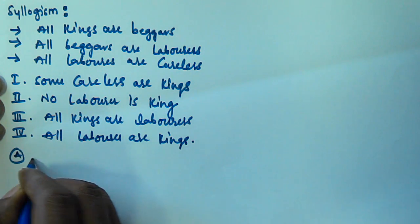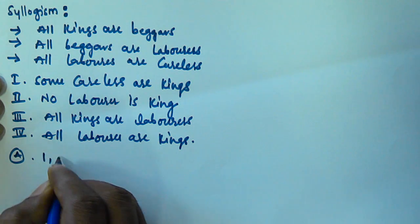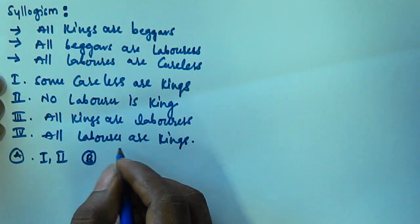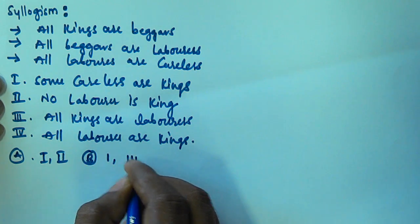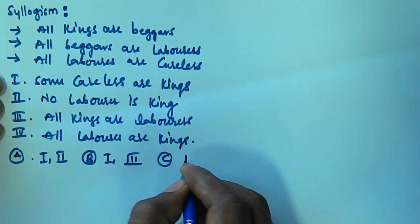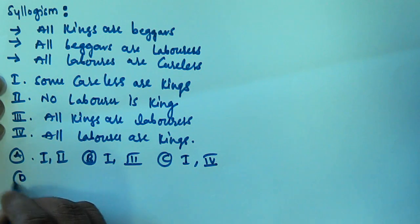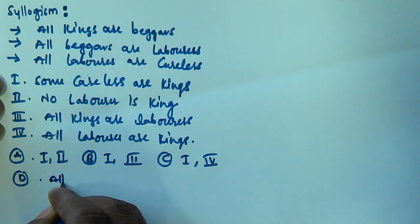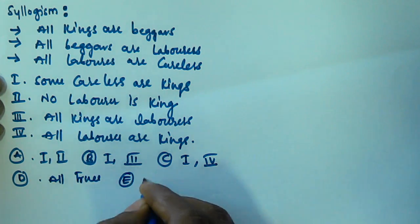Option A is: 1 and 2 are true. Option B is: 1 and 3 is true. Option C is: 1 and 4 is true. Option D is: all true. And option E is: none of these.